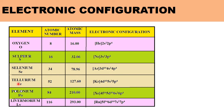Tellurium has atomic number 52, mass number 127.60, and configuration is [Kr] 4D10 5S2 5P4. For Polonium, atomic number 84, mass number 210, and electronic configuration is [Xe] 4F14 5D10 6S2 6P4. And for the last member, Livermoreum, atomic number 116, mass number 293.